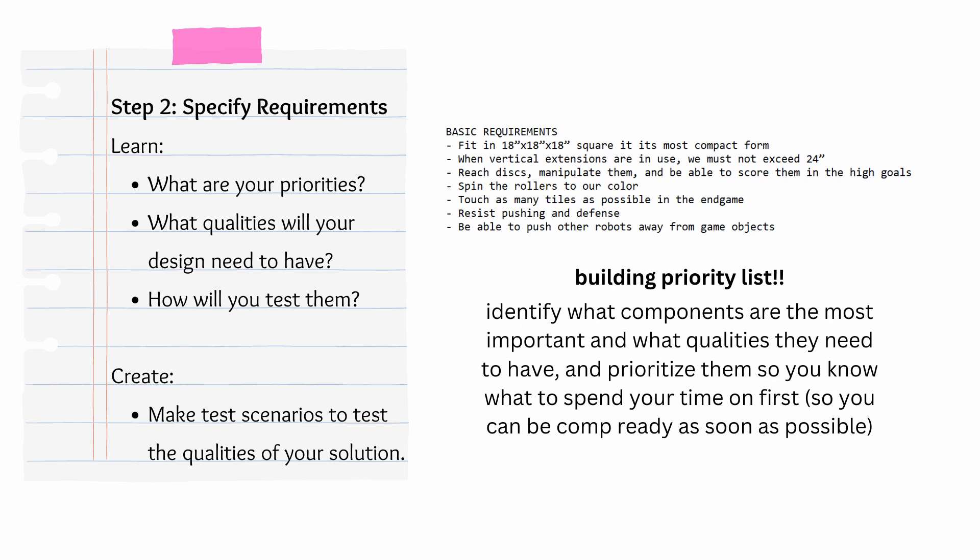The next step is about specifying requirements. This step is about figuring out your priorities in building in order to make your strategy happen. In order for your strategy to work, your robot will need to be this fast, this light, and it'll need to have a grabber, an intake, or something else. Make sure that you're organizing these by importance so you know what you need to focus on first and what you need in order to be competition ready as soon as possible. You're going to be thinking about all of those things and making testable scenarios for your build designs — identifying thresholds like 2 tiles a second or 15 pounds weight. So when you're testing, if your design doesn't meet the requirements, you can quantify what you have to change in order to make it better.